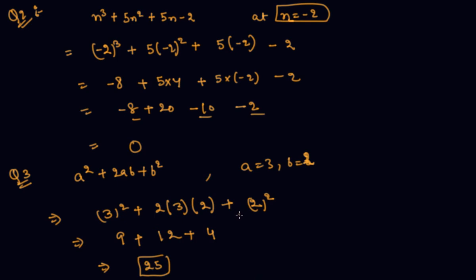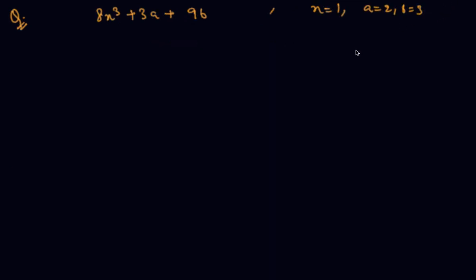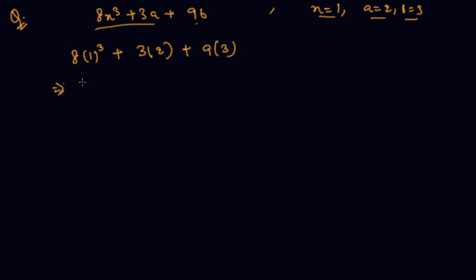Let me give you one more typical question in which I will give you three variables. We have to find the value of this expression where x equal to 1, a equal to 2, and b equal to 3. Putting the values: 1 cubed is 1, plus 6, plus 27. This comes out to be 8 plus 6 plus 27, which is 41.